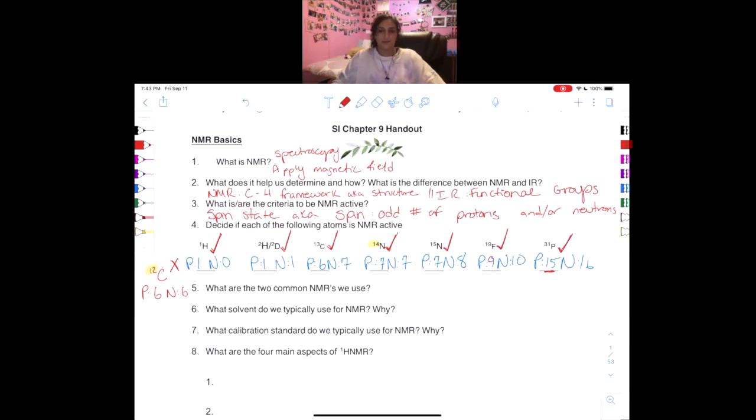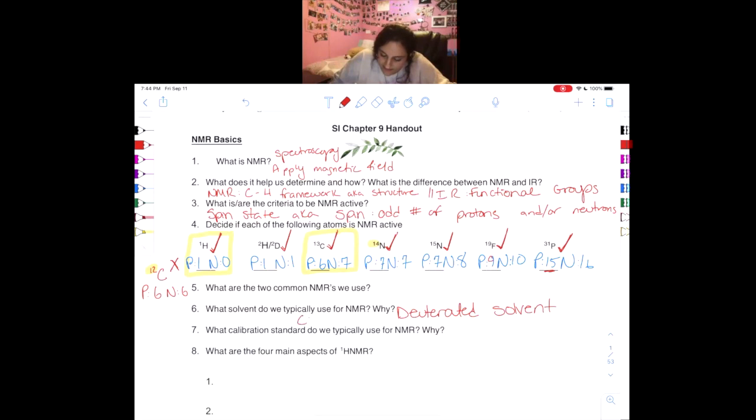All right, what are the most common NMRs that we use? Well, that would be hydrogen one and carbon 13. Those are the only ones we're going to focus on in this class. And the solvent - remember when I said that it's important to know that hydrogen one and deuterium have two different spectra? Well, the reason it's important is actually because we are going to use a deuterated solvent, and the reason we use a deuterated solvent is to avoid signal interference. And one of the most common ones that we're going to use, I'll give you an example, is CDCl3, it's a very common one.